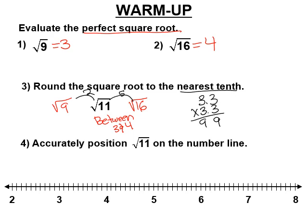3.3 times 3.3 is 10.89, which is almost 11. So the square root of 11 is approximately 3.3. And we're going to be putting these on a number line today, so the square root of 11 would go right there.